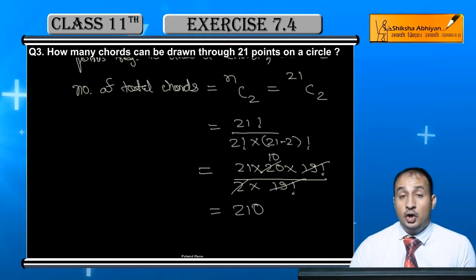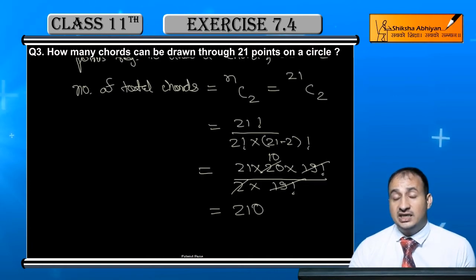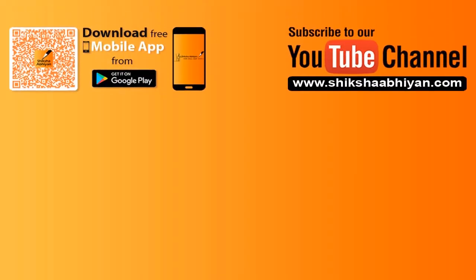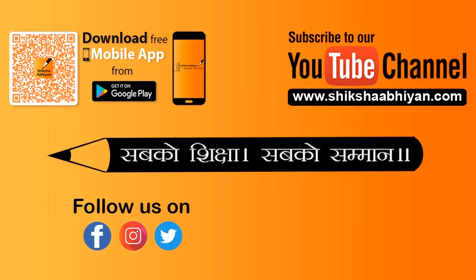So 210 chords you can draw under the given condition of 21 points.